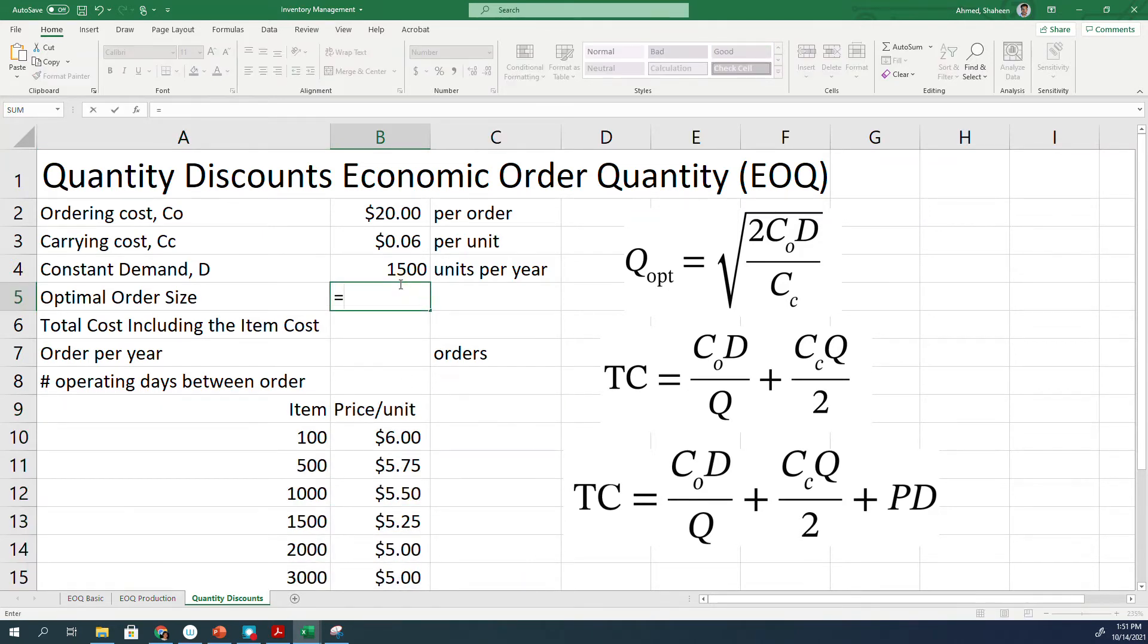First thing, the optimum order size does not change. It's the same formula we have seen in the basic economic order quantity model. So just calculate that.